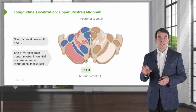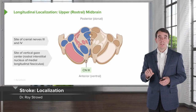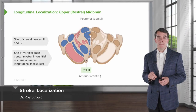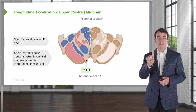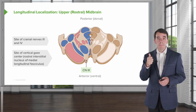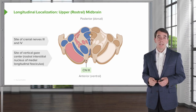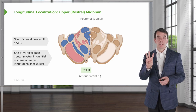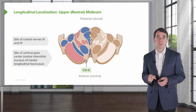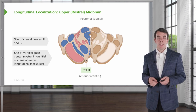Let's take a couple of minutes to dive deep into the brainstem. The brainstem is composed of three sections: the midbrain, the pons, and the medulla. Let's look at the major nervous structures that exist in each of those three areas and think about the common stroke syndromes that would present with pathology in each of those areas.